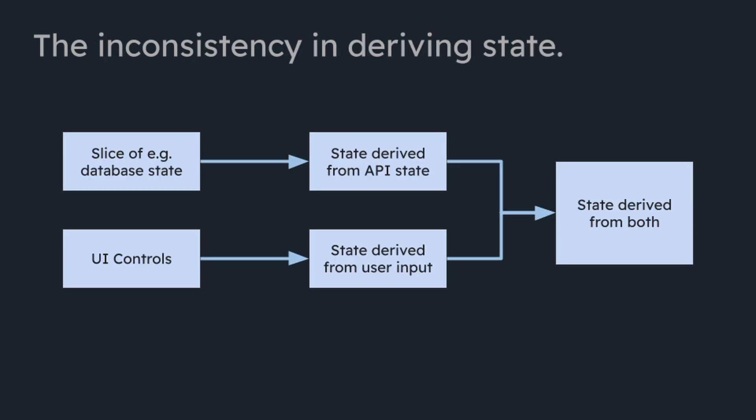There is a massive inconsistency in deriving states. Generally we talk about two kinds of state: one is state that we usually call data, which comes from the API and typically represents a slice of the database state. And then we have UI state. My belief is that these two kinds of state are not really separate and cannot be thought of separately. There is no such thing as UI state, because all state that we can access on the UI is by definition UI state.